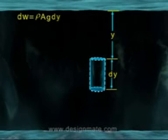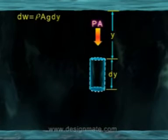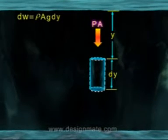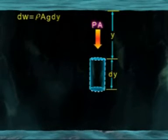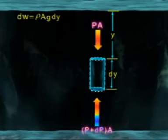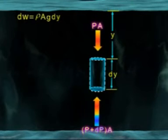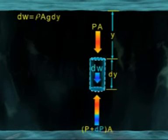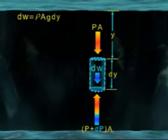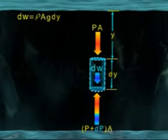Now, the downward force acting on the top of the cylinder is PA and the upward force acting on the bottom of the cylinder is (P + dP)·A. Another force acting due to the weight of the cylinder is in the downward direction.